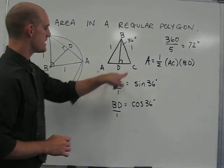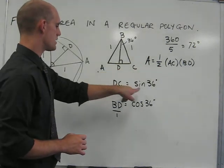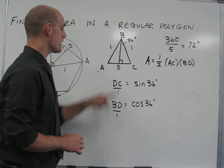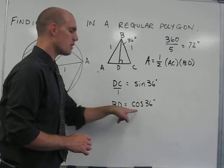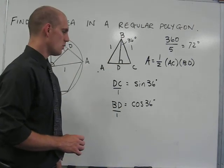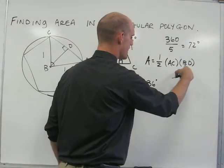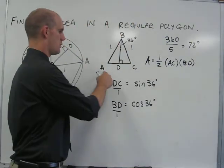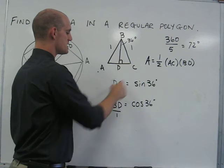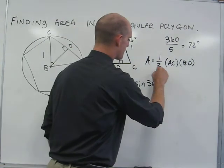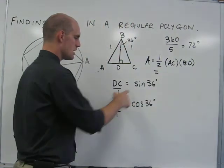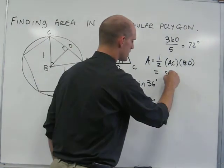So knowing that DC is equal to the sine of 36, and BD is equal to the cosine of 36, we can set up the area of this triangle to be one-half AC times BD. Well, one-half of AC is DC, so really the area of the triangle is equal to the sine of 36 times cosine of 36.